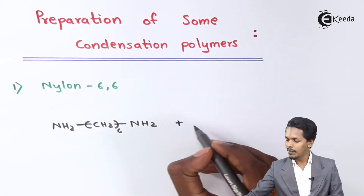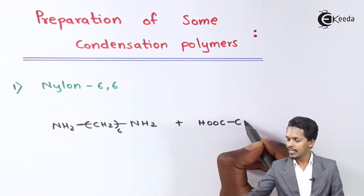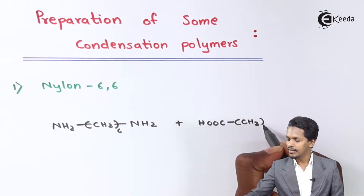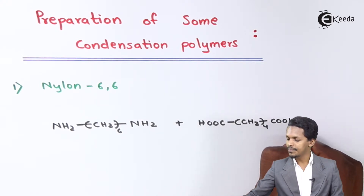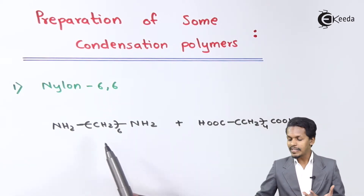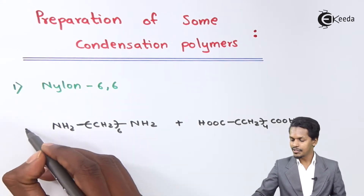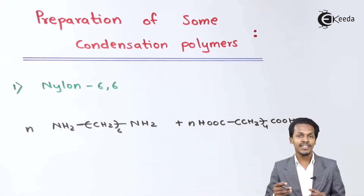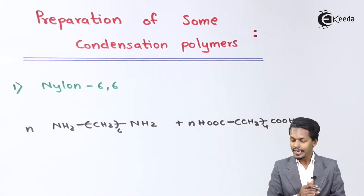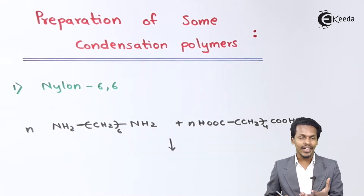The second monomer is adipic acid, which has the structure HOOC-(CH2)4-COOH. When hexamethylene diamine and adipic acid are reacted with each other in equal proportions (N moles each), the product we initially get is a salt.